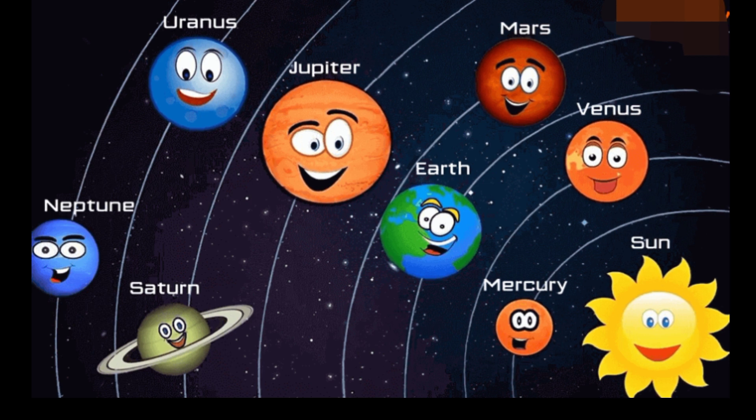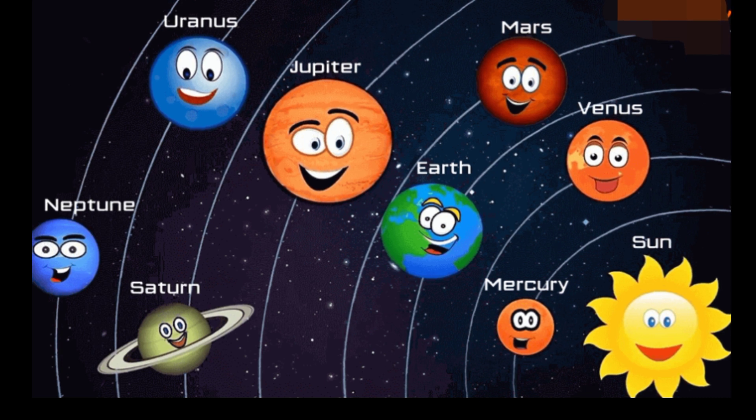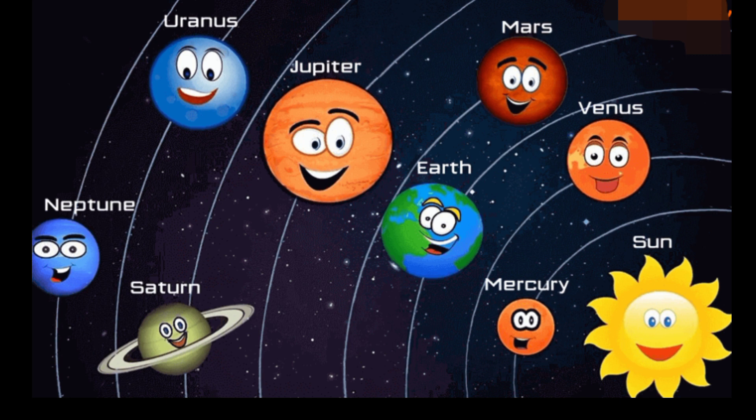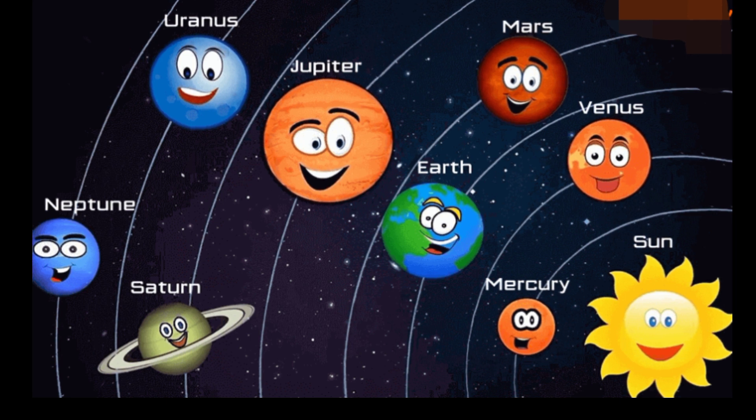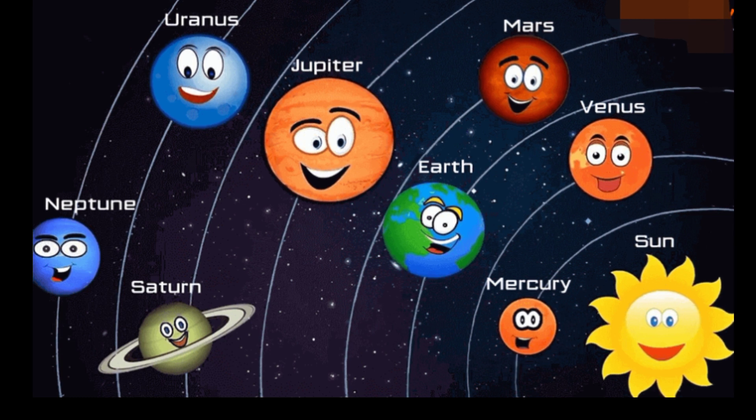The next planet is Mars. Mars is a dusty, cold, desert world with a very thin atmosphere. There is strong evidence Mars was, billions of years ago, wetter and warmer with a thicker atmosphere.